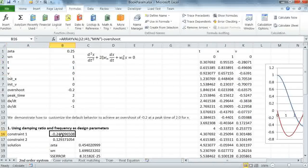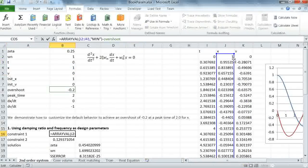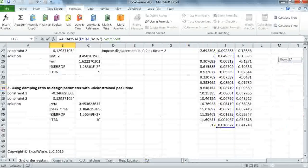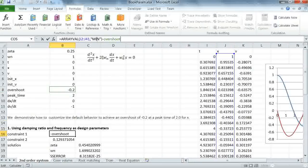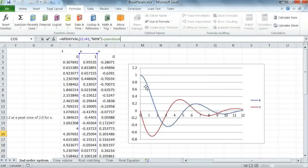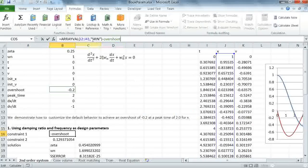It's actually very simple. My first constraint here selects the displacement vector from this array, which is in column J2 to J41, and applies the operation minimum. That computes the minimum value of the displacement, and I'm using minimum because the displacement is negative. Then I want to compare this to my overshoot, which is minus 0.2, my target value. So this is my first constraint: the difference between my target value and the minimum of the displacement.